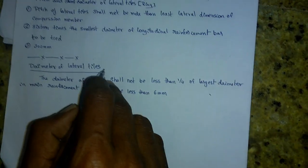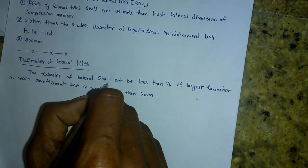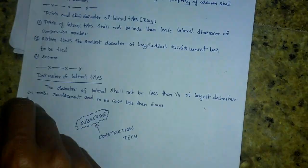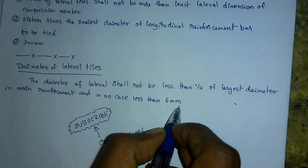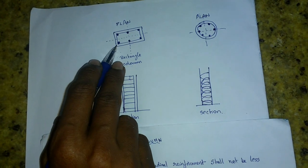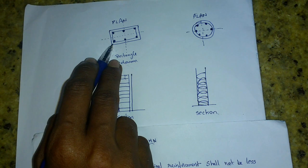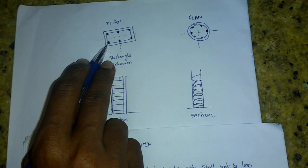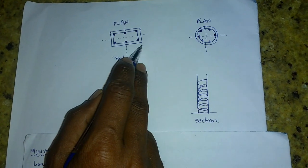The diameter of the lateral ties, meaning the ring, shall not be less than one-fourth of the largest diameter of the main reinforcement. For example, if the largest bar is 16mm, divide by 4. In any case, it should not be less than 6mm.